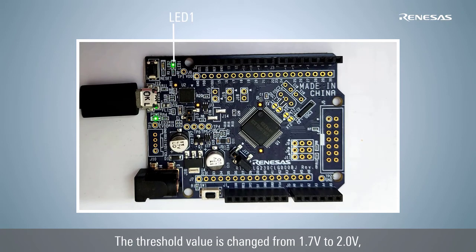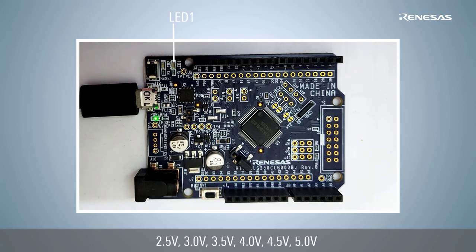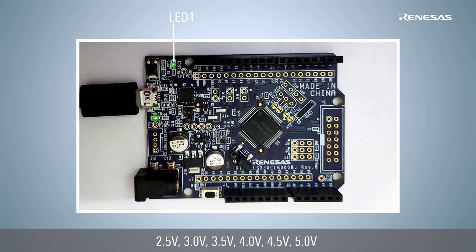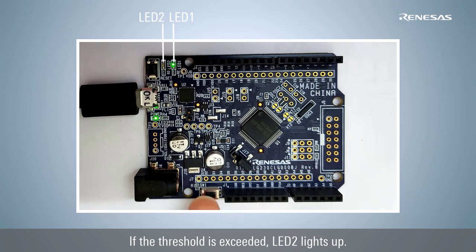Press switch 1 to change the threshold value. The threshold value changes from 1.7V to 2V, 2.5V, 3V, 3.5V, 4V, 4.5V, and 5V each time switch 1 is pressed. If the threshold is exceeded, LED 2 lights up.